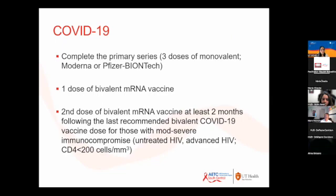For COVID-19, current recommendations are to complete the primary series — three doses of the initial monovalent mRNA Moderna or Pfizer-BioNTech vaccine — followed by one dose of the bivalent mRNA vaccine. The most recent recommendation adds a second dose of the bivalent vaccine at least two months after the last dose for those with moderate to severe immunocompromising conditions, which includes untreated HIV or HIV with a CD4 count under 200.